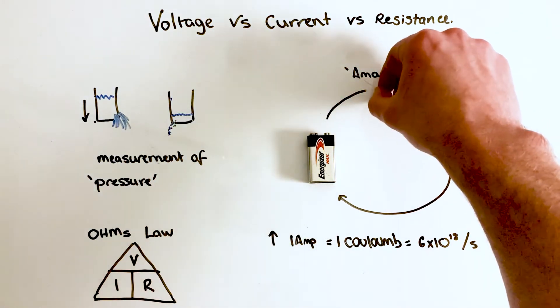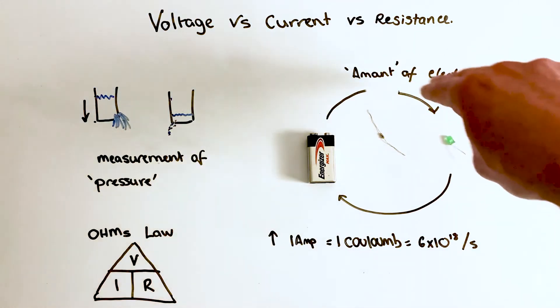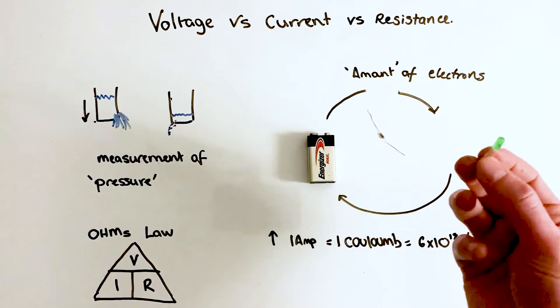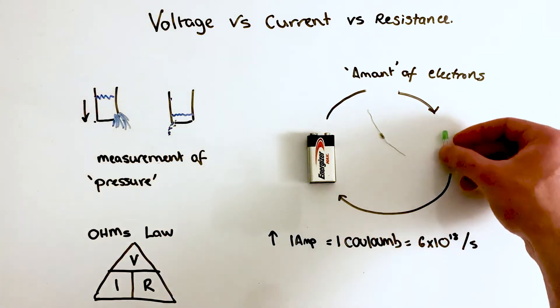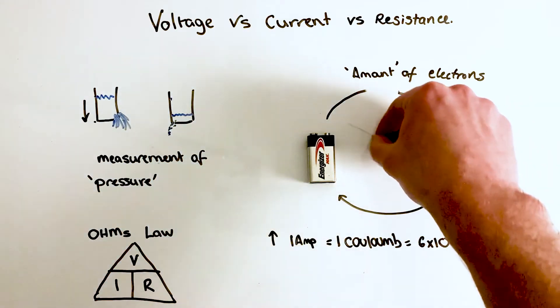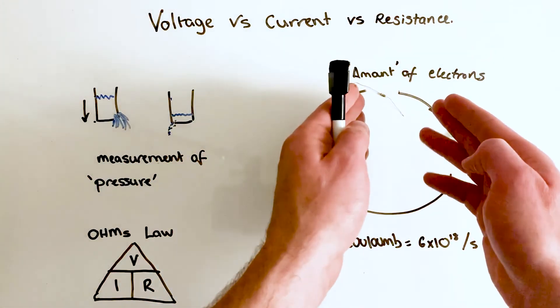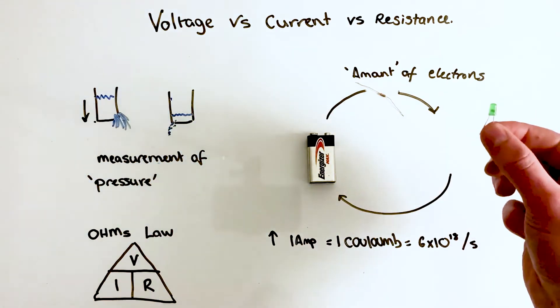But that's the idea of resistance. You're kind of limiting the amount of electrons going through the circuit. And the reasons you might do that is this light bulb here, it might not be able to handle one amp or a lot of electrons at any given time. So we use this resistor to restrict the amount of electrons that come through to protect our internal components.